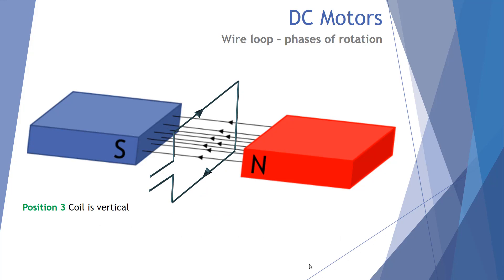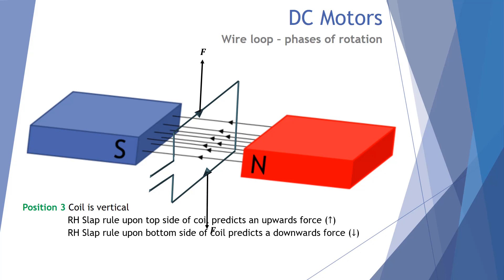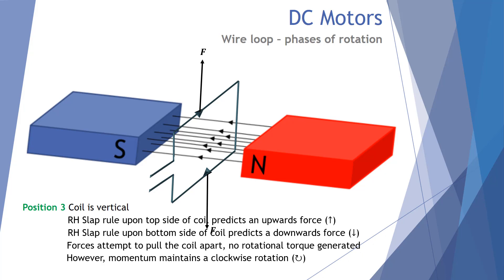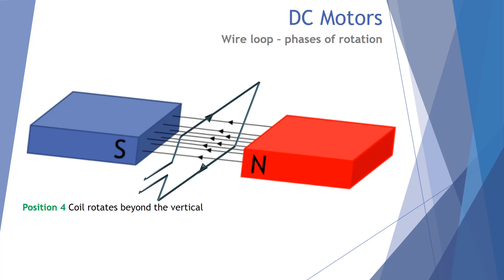The coil now reaches position three, where it is vertical. In this situation, the right-hand slap rule predicts an upwards force on the top side and a downwards force on the bottom side. When these two forces act, no torque is generated — this effectively tries to pull the coil apart, stretching it up and down. However, because of the momentum from the previous rotation, the coil maintains a clockwise rotation beyond the vertical into position four.